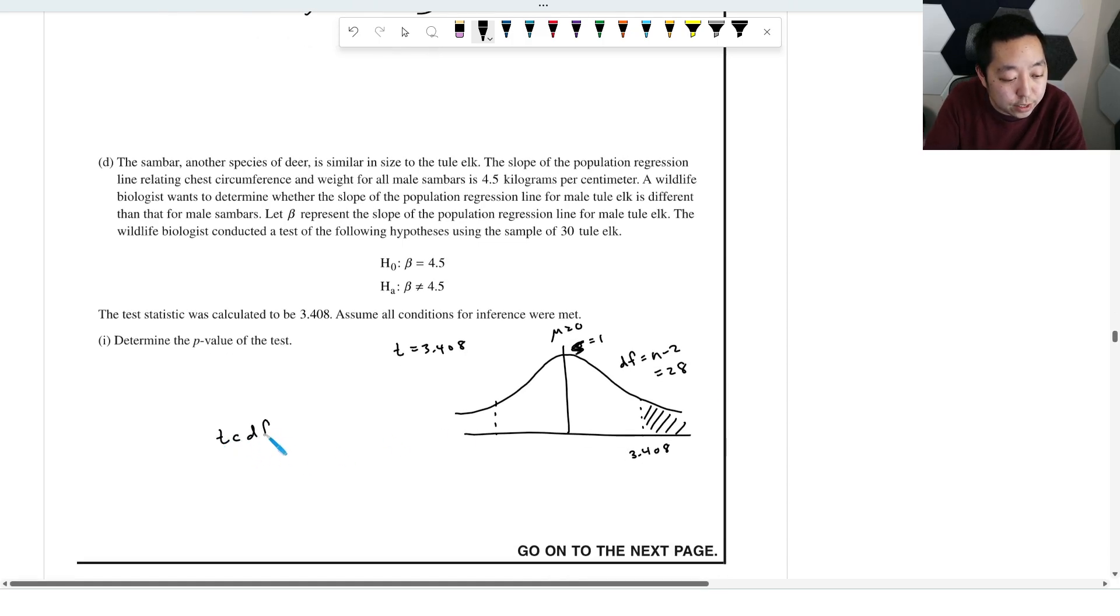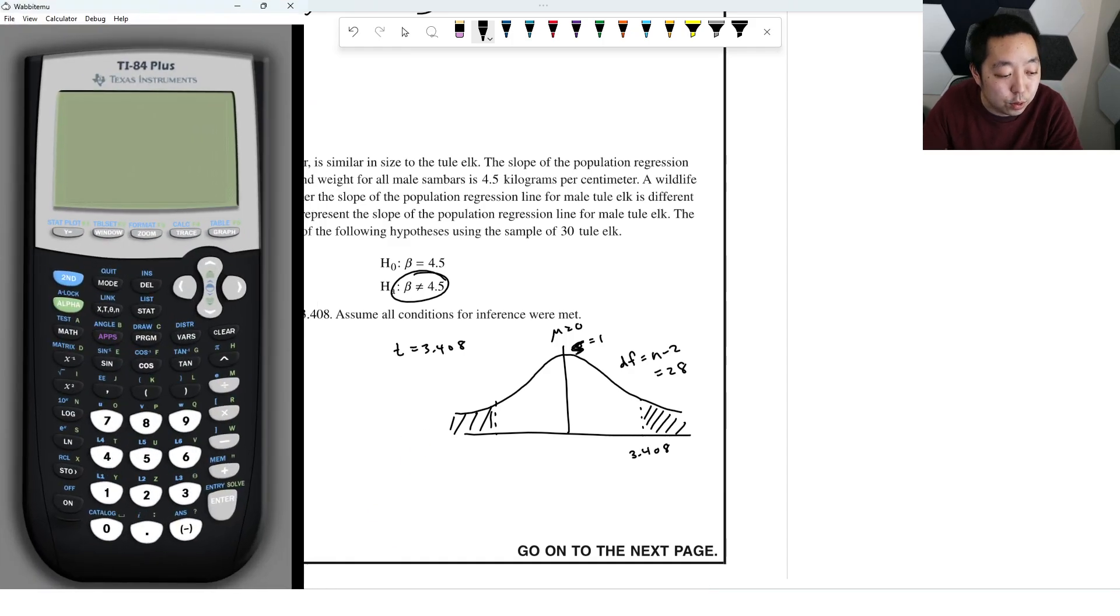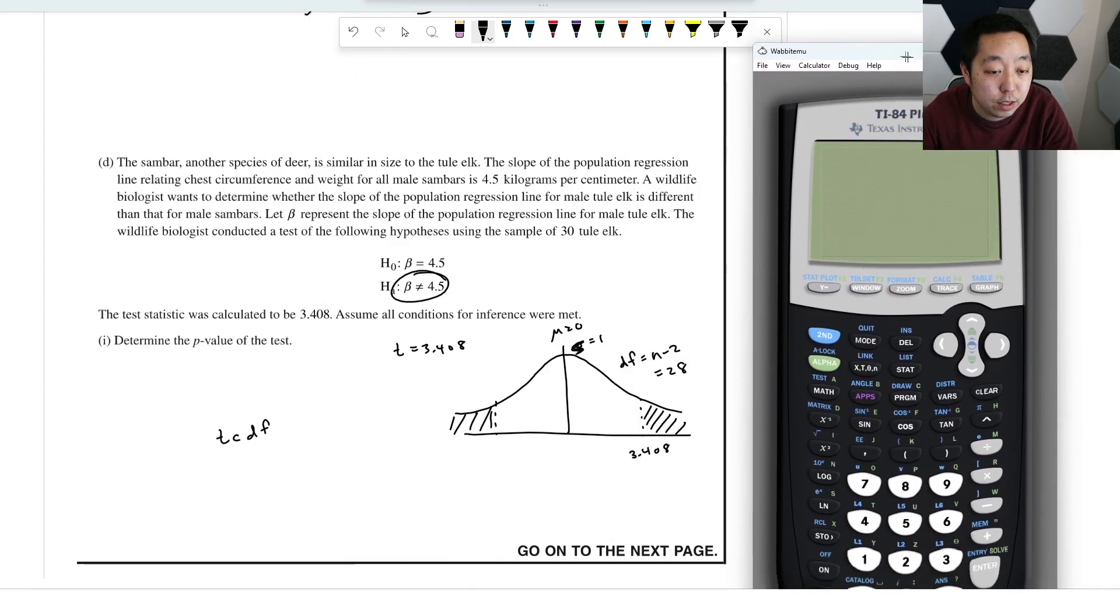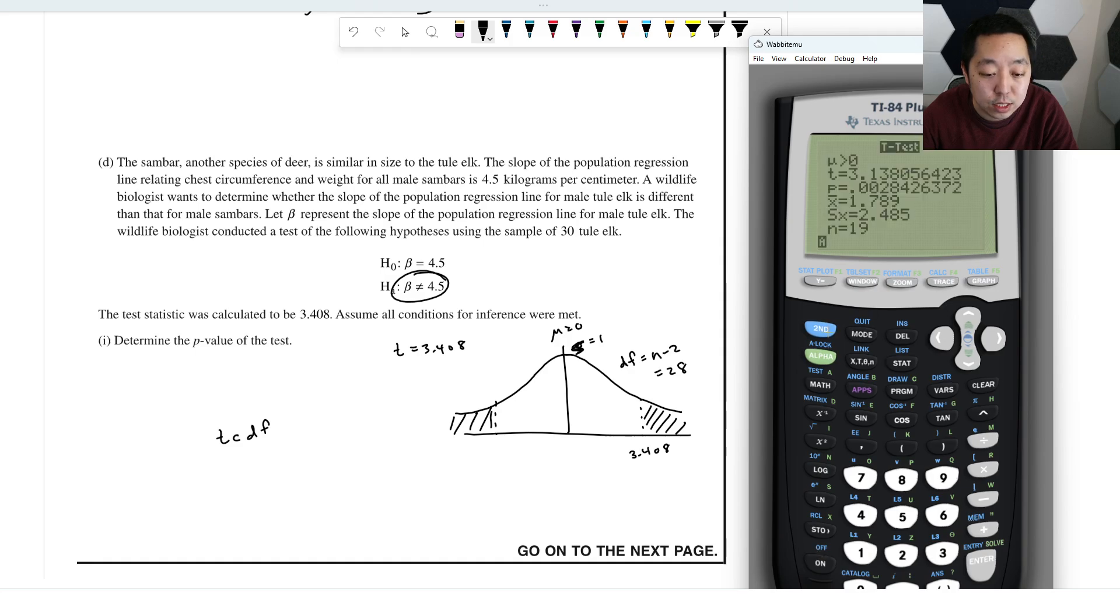So we're going to use tCDF to find this area. Now, because it's not equal, you want both areas because they didn't actually say greater or less. They will actually want these two areas. So I'm actually going to double that area. And how am I going to find one area is I'm going to use tCDF. Now tCDF, the way tCDF works is, on my calculator, mine can do left and right bounds.